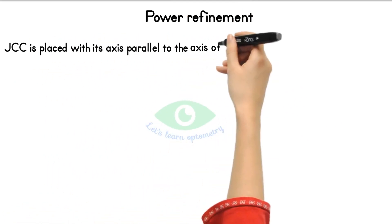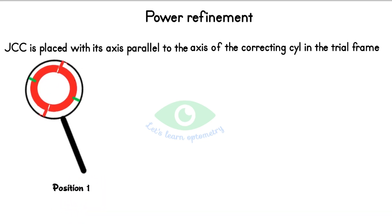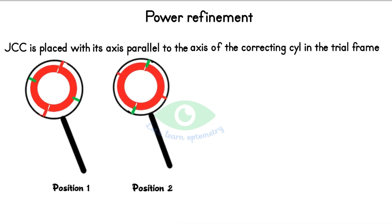Power refinement: Here the JCC is placed with its axis parallel to the axis of the correcting cylindrical lens in the trial frame. Flip the JCC so that the red and green markings are reversed. Ask the patient to tell any change in vision between the two positions. In position 1, the minus axis is parallel to the correcting cylindrical axis; in position 2, the plus axis is parallel. If the patient prefers position 2, the plus axis is coinciding with the correcting cylindrical axis.